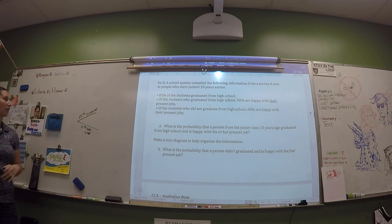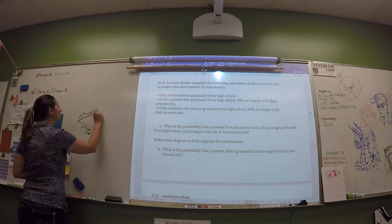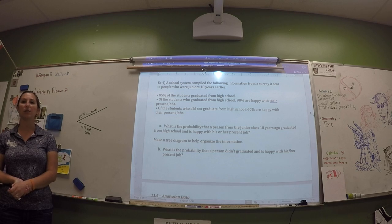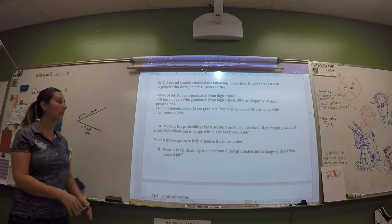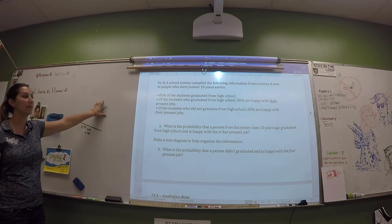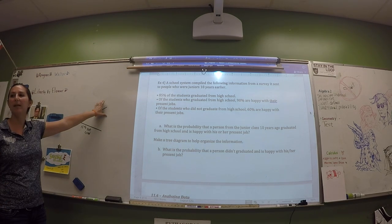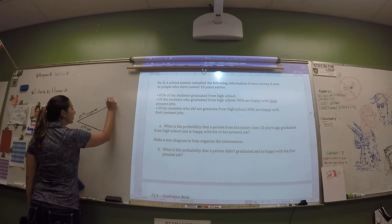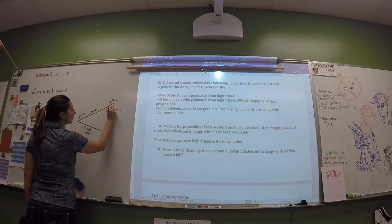So 85% graduated and 15% did not graduate. The next bullet point says: of the students who graduated, there are two options — 90% are happy and 10% are not happy with their present jobs. So from the graduated branch, 90% are happy and 10% are unhappy.